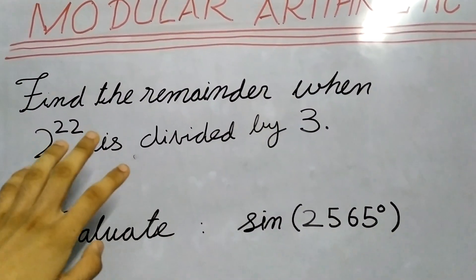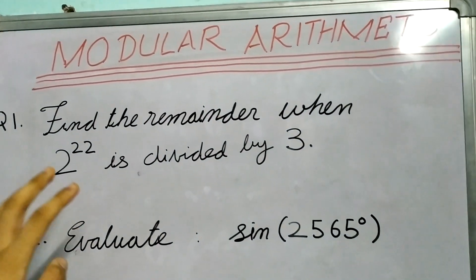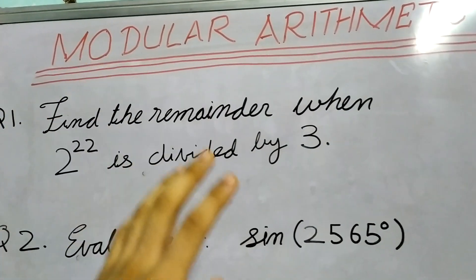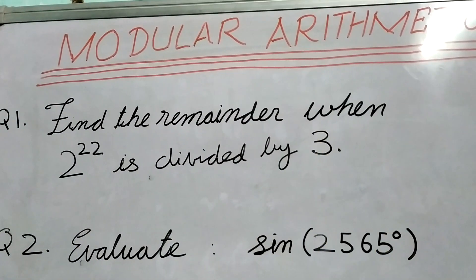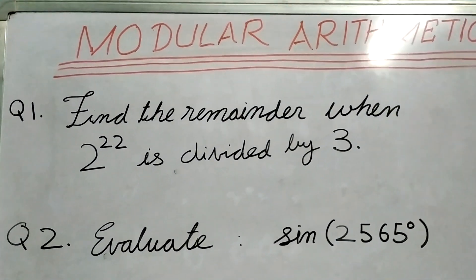The first question is that we need to find the remainder when 2 to the power 22 is divided by 3. Okay, interesting.